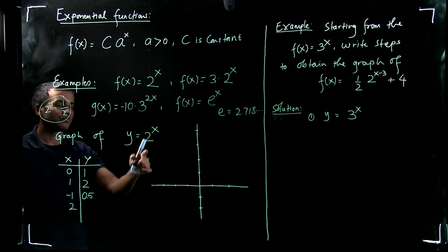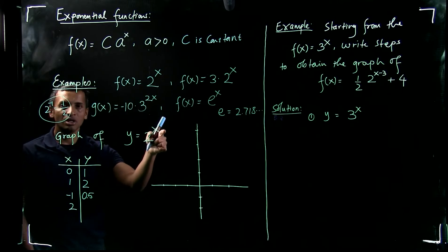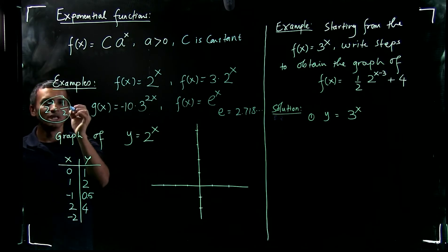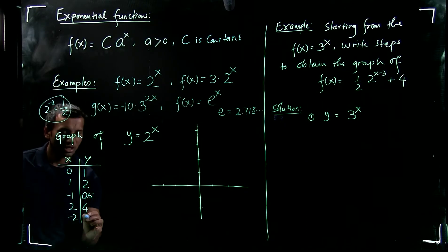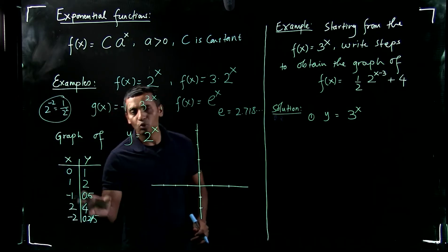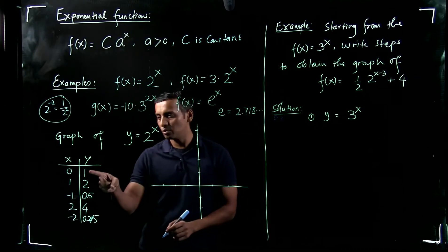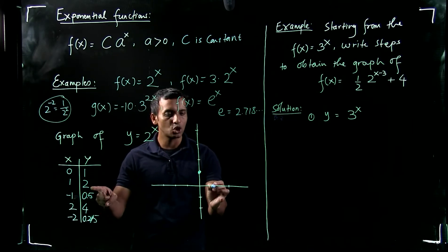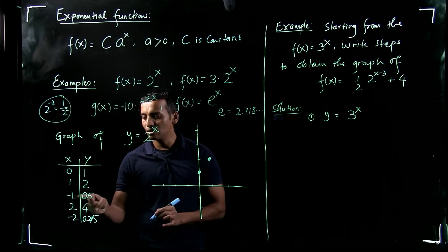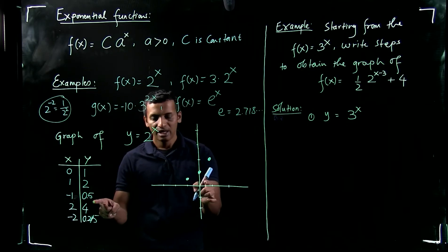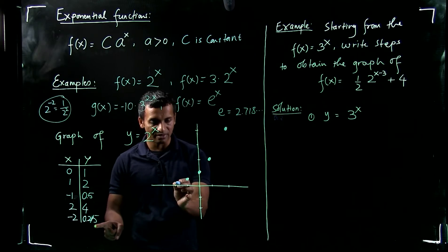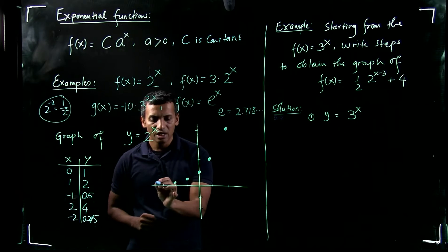When x equals 2, y equals 2 squared, which is 4. When x equals negative 2, y equals 1 over 2 squared, which is one fourth, or 0.25. You continue taking values of x and computing y. At x equals 0 you get 1, at x equals 1 you get 2, at x equals negative 1 you get 0.5 somewhere here, at x equals 2 you get 4, and at x equals negative 2 you get 0.25.